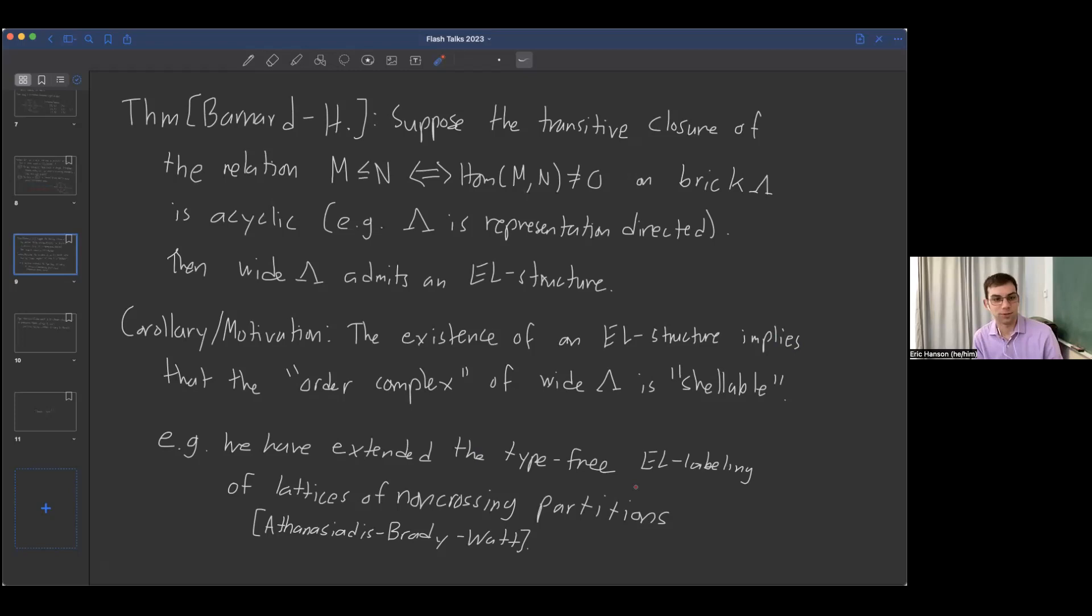I'm going to suppose that the transitive closure of the relation where we set M less than N if HOM of M, N is non-zero, restricted only to the bricks, is acyclic. For example, if lambda is representation directed, that by definition means that this relation on all indecomposables is acyclic, then it would certainly satisfy this property. And if this happens, then this poset wide lambda admits an EL structure.